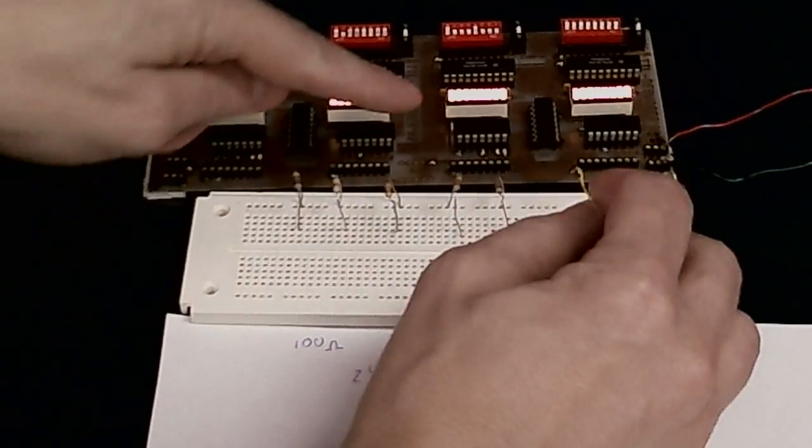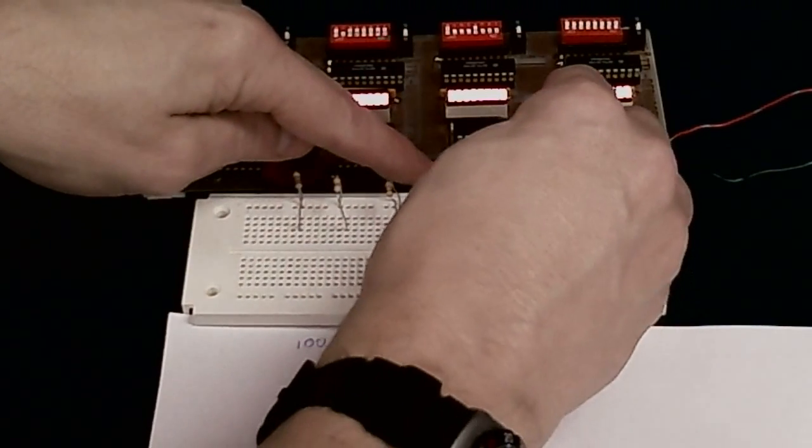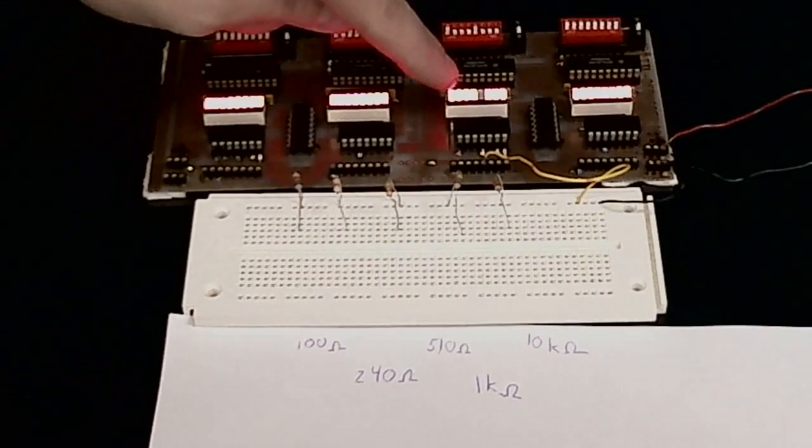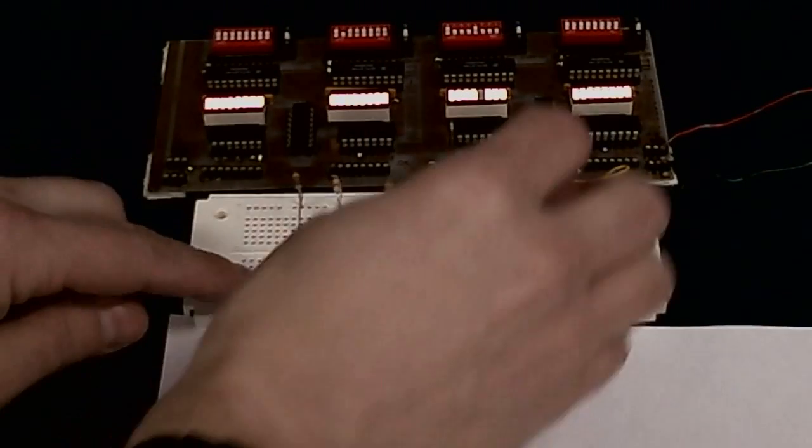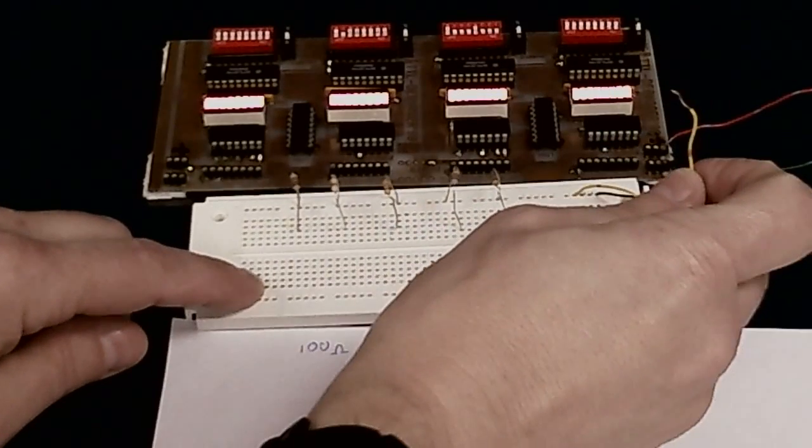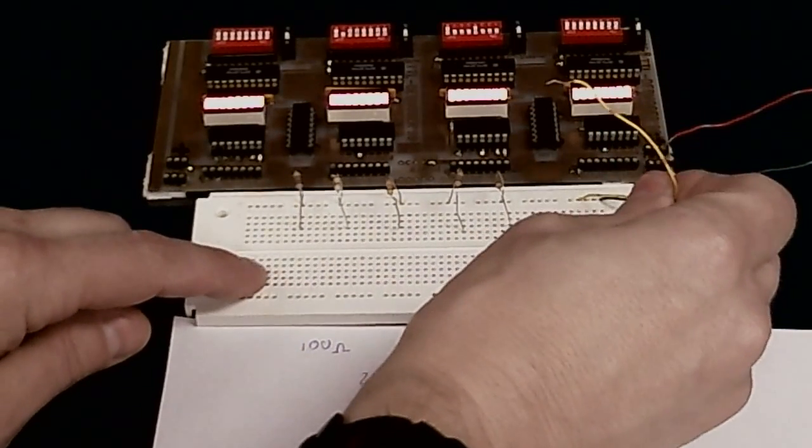So if I, for instance, ground this pin here, you notice this LED goes off, indicating that this is a low. That's what I've shown. You'll notice with this unconnected, it's high, which means the inputs are floating high.